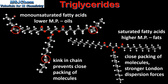Next we'll compare the melting points of triglycerides made from mono or polyunsaturated fatty acids and those made with saturated fatty acids. The triglyceride on the left is formed from monounsaturated fatty acids which have carbon-to-carbon double bonds. The triglyceride on the right is composed of saturated fatty acids which have carbon-to-carbon single bonds. Triglycerides which are composed of mono unsaturated or polyunsaturated fatty acids have lower melting points and are known as oils. Triglycerides formed from saturated fatty acids have higher melting points and are known as fats.